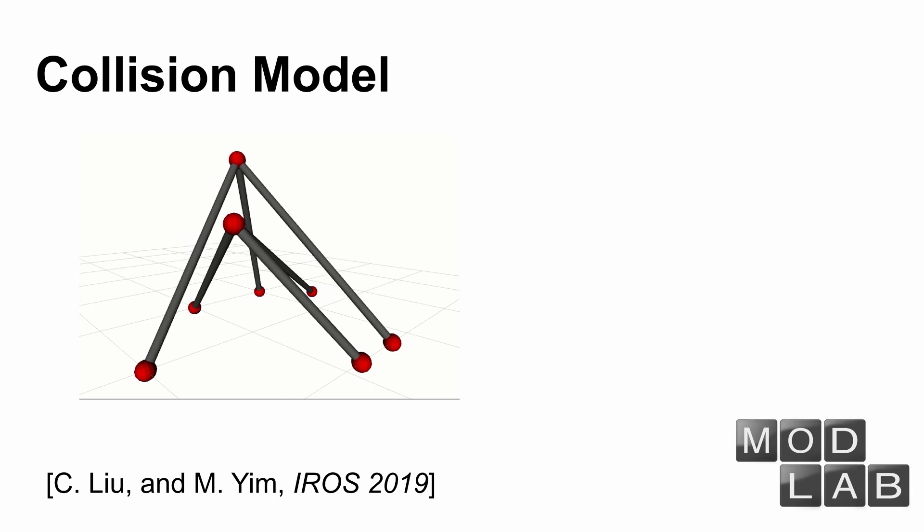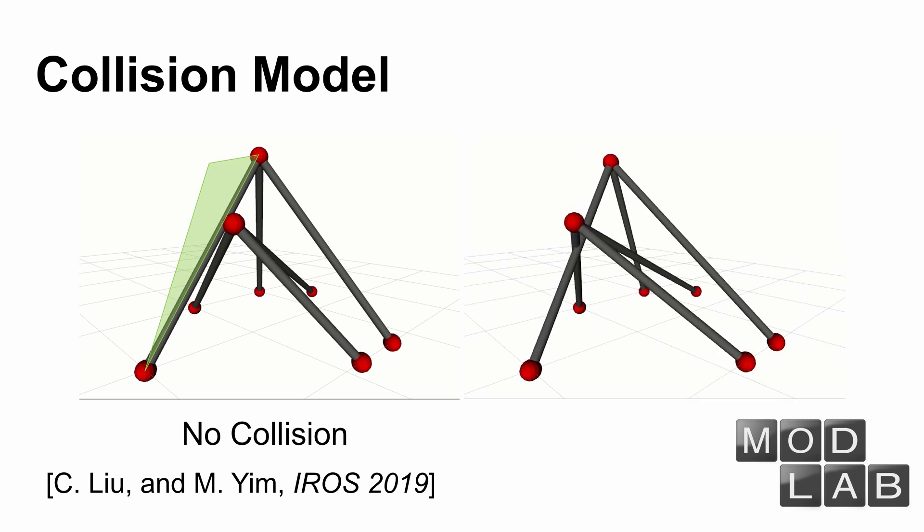An efficient collision model can be applied. We just need to check the intersection between any still member with the triangle generated from the moving member.